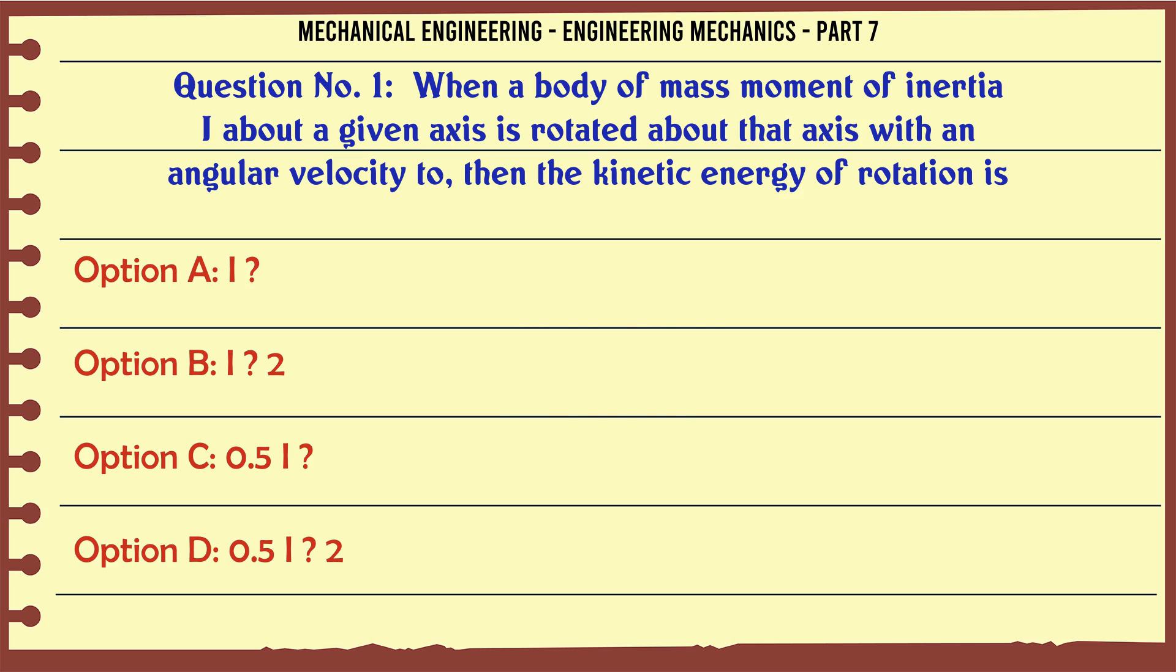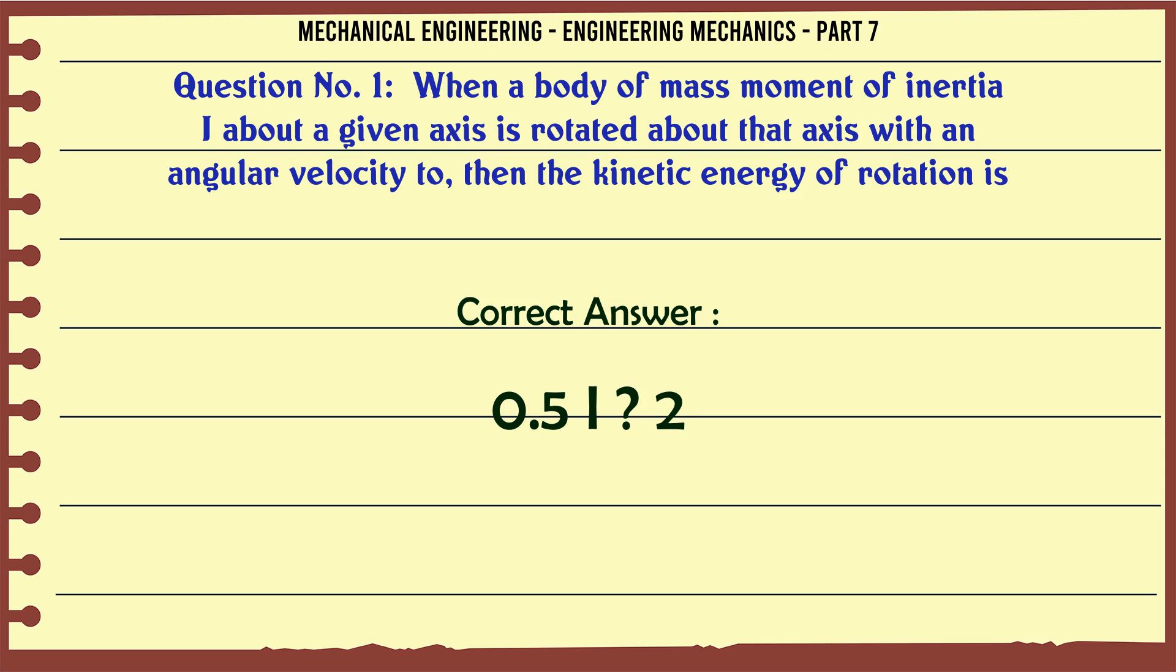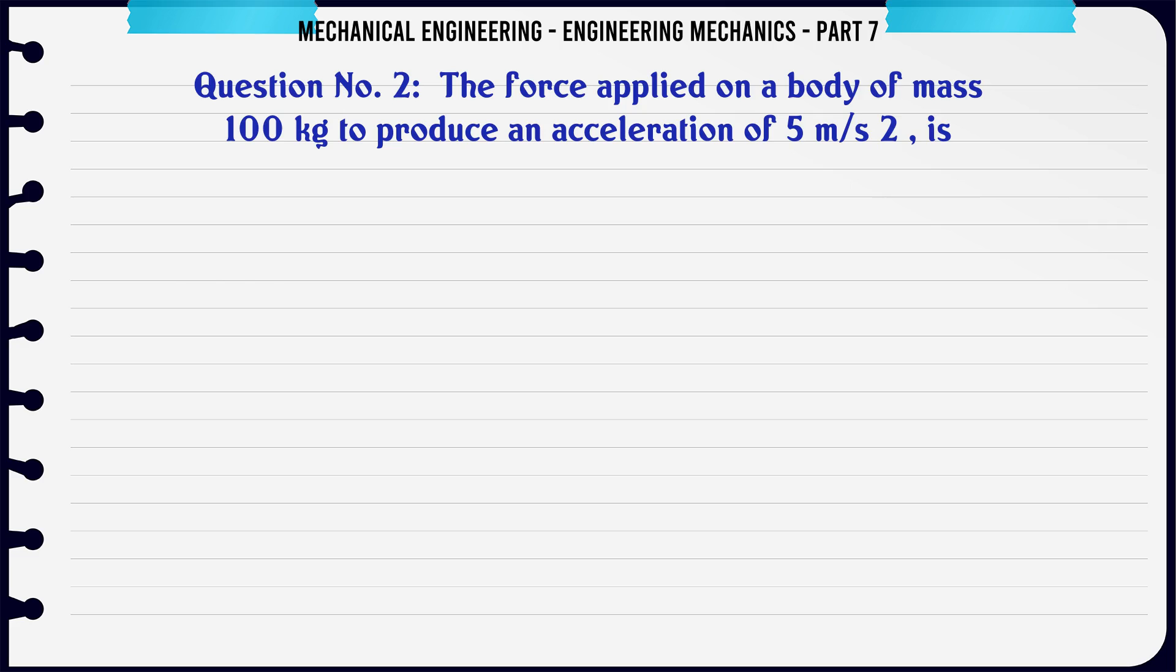The correct answer is 0.5 I². The force applied on a body of mass 100 kg to produce an acceleration of 5 m/s² is: Option A: 20 N, Option B: 100 N, Option C: 500 N, Option D: None of these. The correct answer is 500 N.